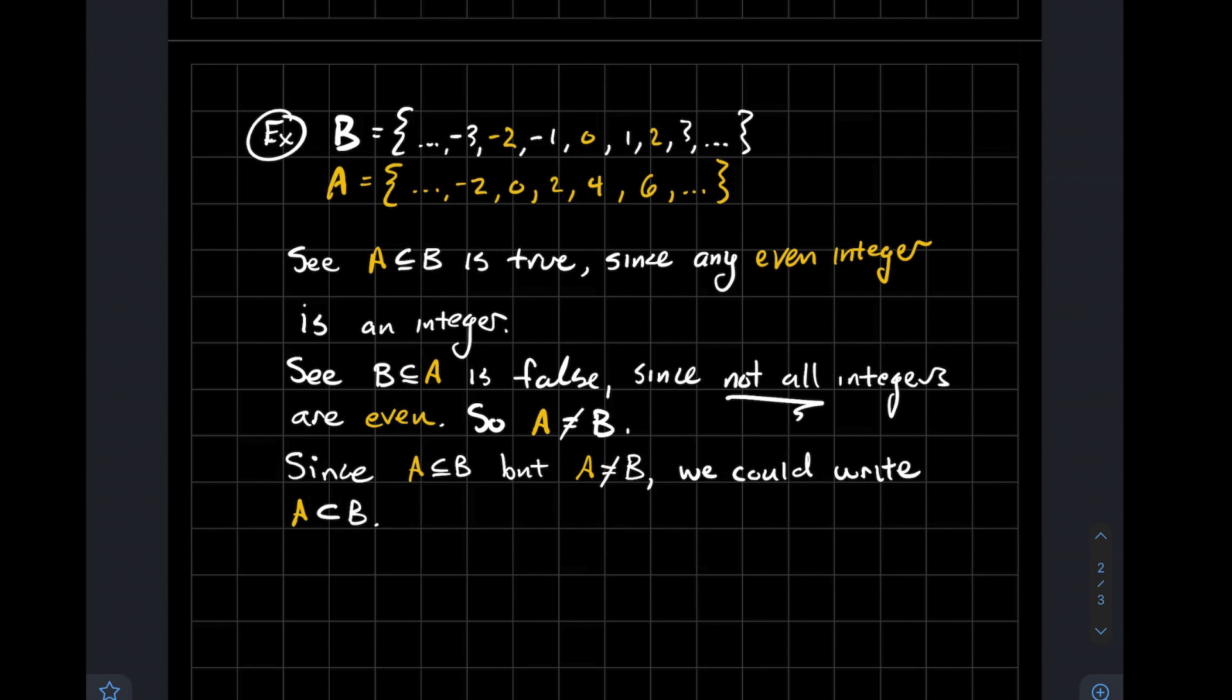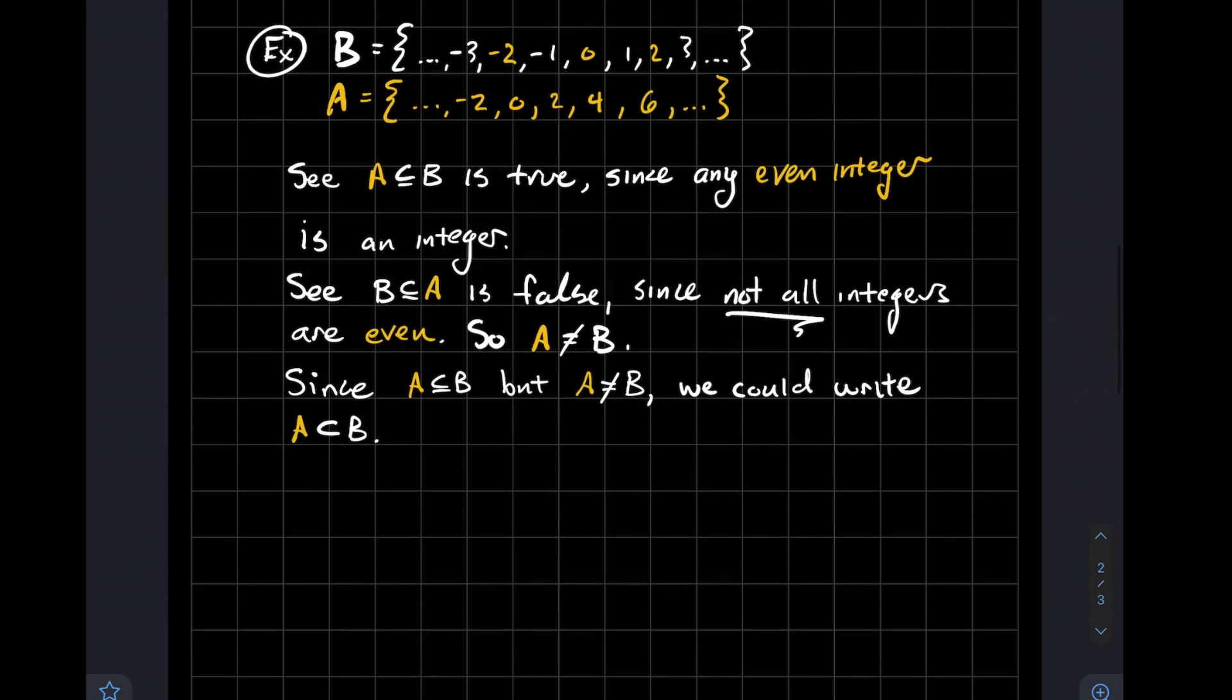And again, if you were so inclined, you could use that symbol without the little bar underneath it to denote that A is a proper subset of B.